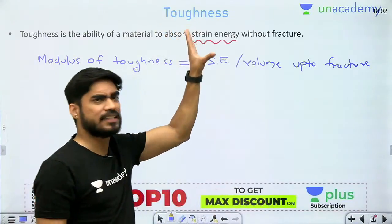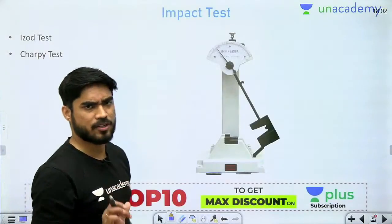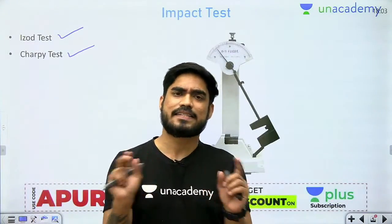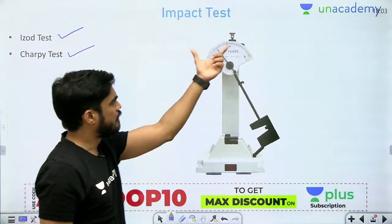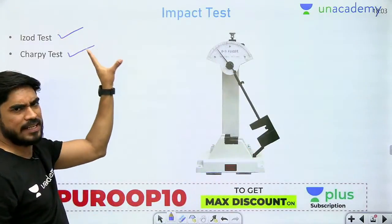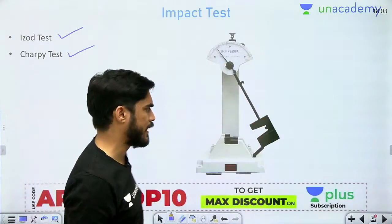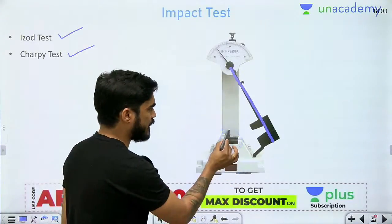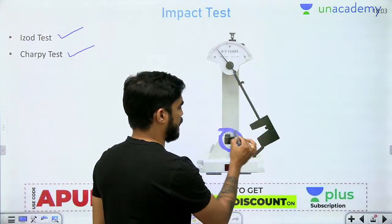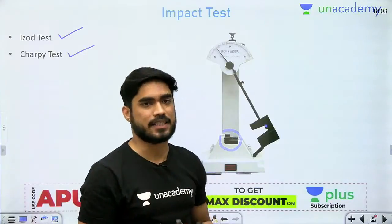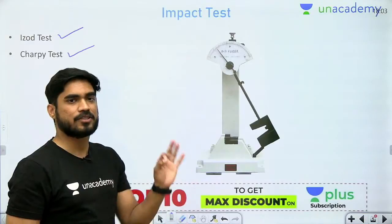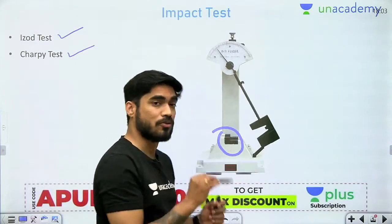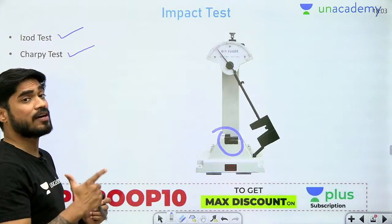To measure the toughness of a material we carry out impact testing, and there are two types: the Izod test and the Charpy test. The basic concept behind both is the same. The machine used is also the same. There is a hammer, and we put the specimen in the machine. We strike the specimen using this hammer so that it fractures, and then we measure how much energy the specimen stored before fracture.